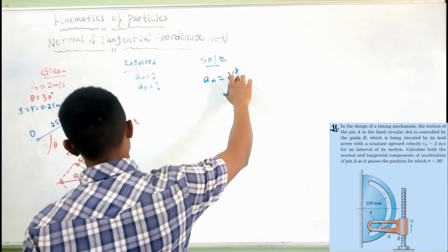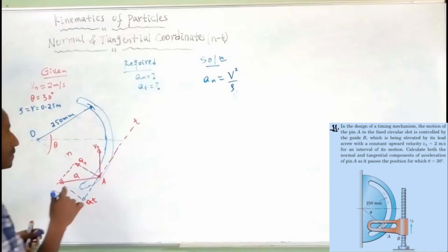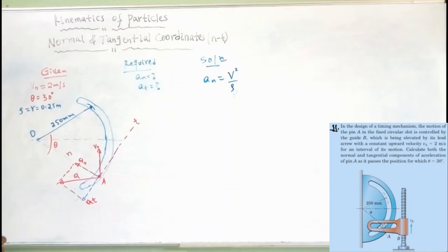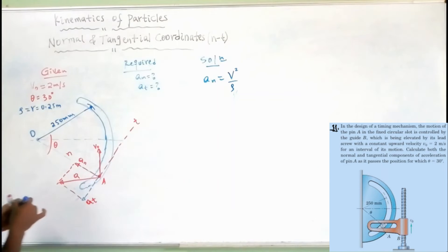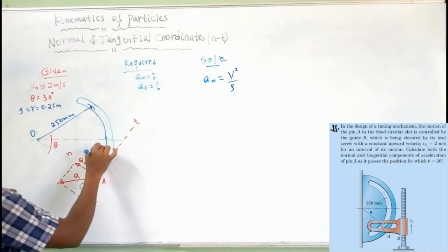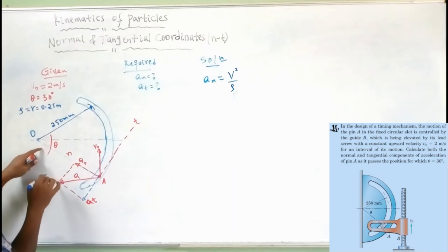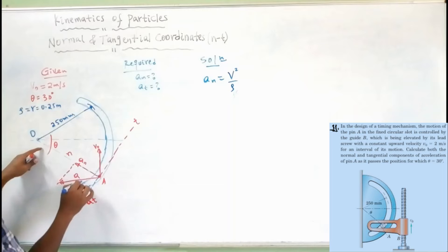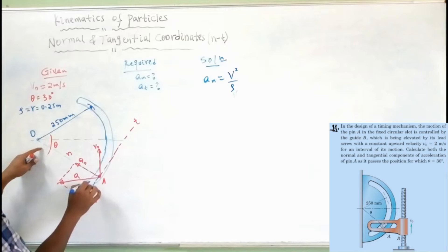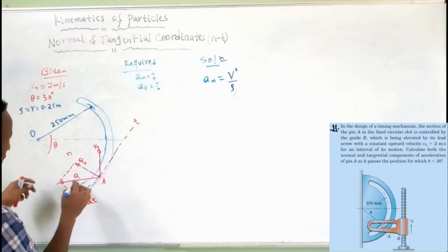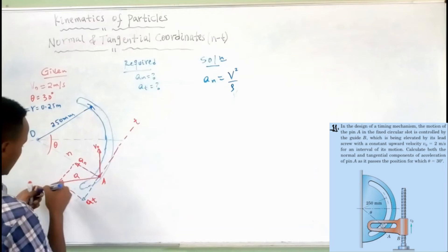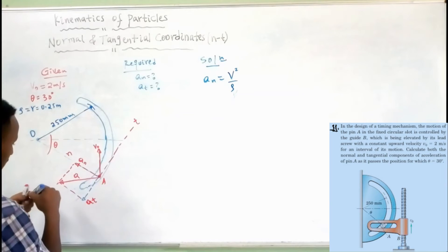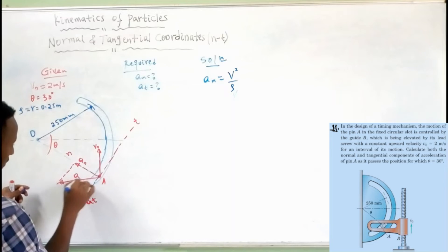The first is V in the center. V is the velocity along the tangential axis. This is V in the center, at each angle theta.